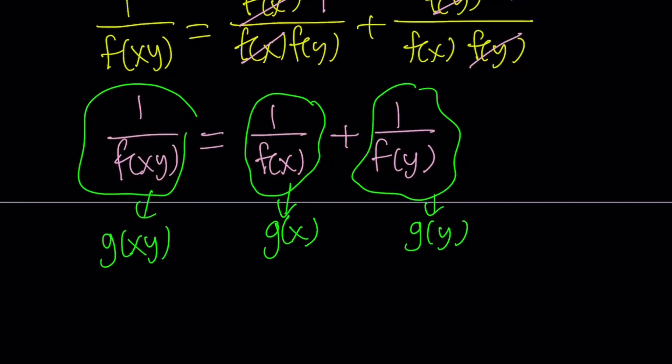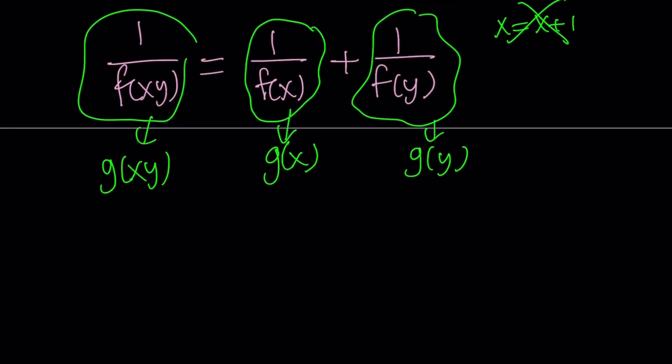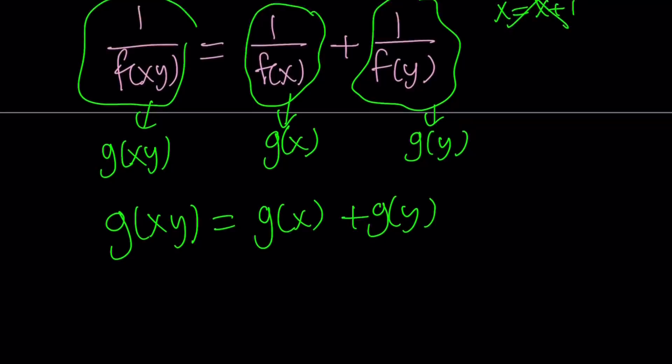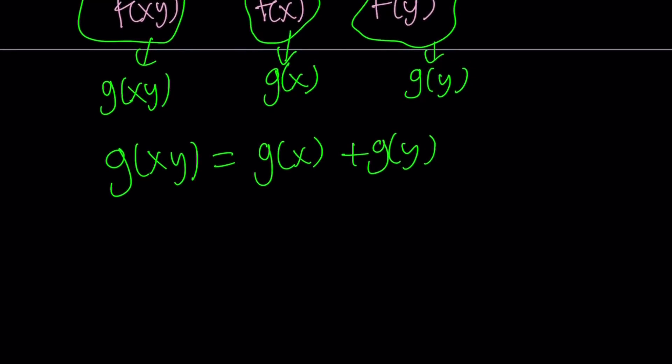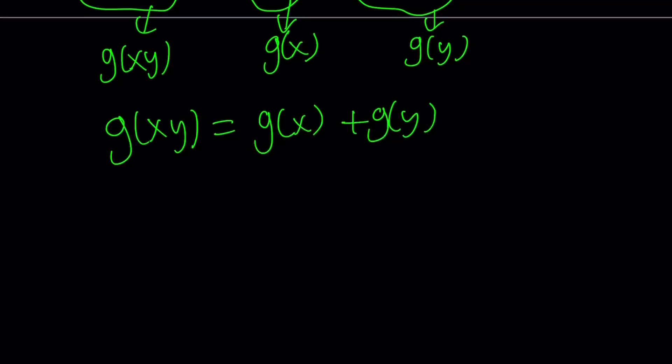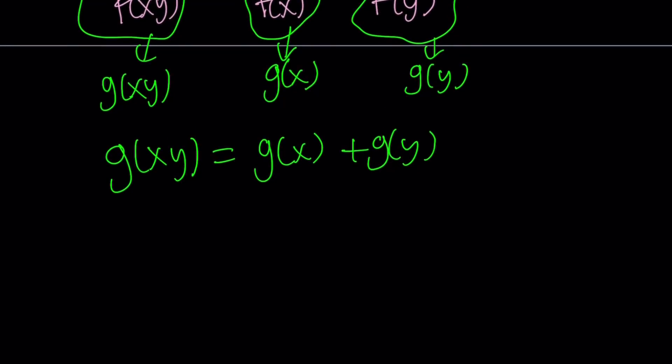So in this case, I have an awesome result, because g of xy equals g of x plus g of y. And that's awesome, because that's Cauchy's functional equation. Obviously, we have to say f of x is continuous, so on and so forth. You know, all those details. But anyways, you hopefully know how to solve this. And I think we recently looked at the version where f of x plus y is equal to f of x plus f of y, but that can be turned into this one as well.